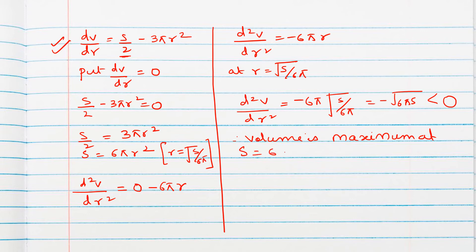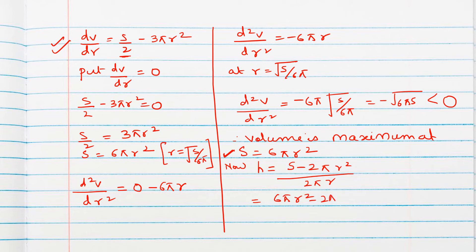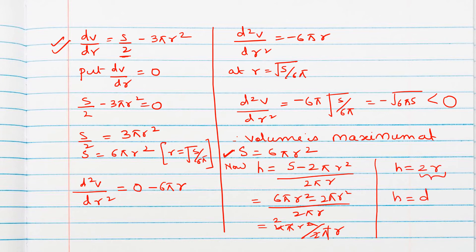Now we show height equals diameter. Substituting s = 6πr² into h = (s − 2πr²)/(2πr): h = (6πr² − 2πr²)/(2πr) = 4πr²/(2πr) = 2r. Since 2r is the diameter, we have proved that volume is maximum when the height of the cylinder equals the diameter of the base.